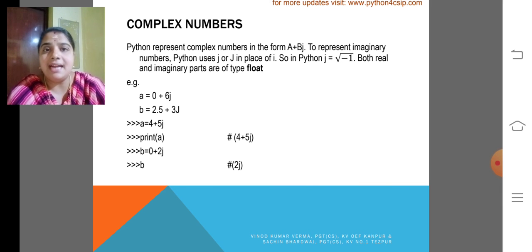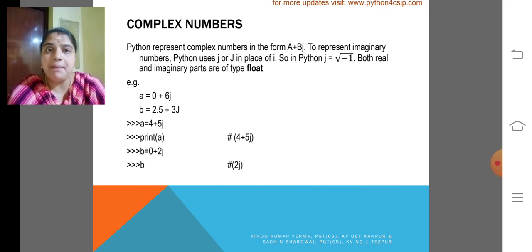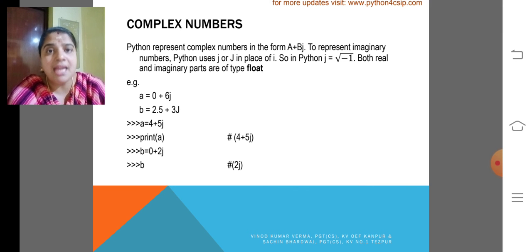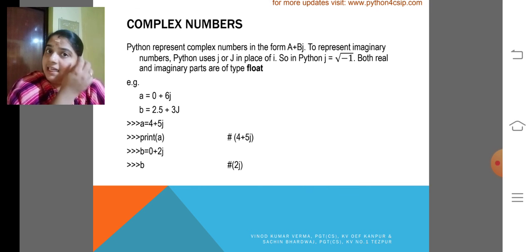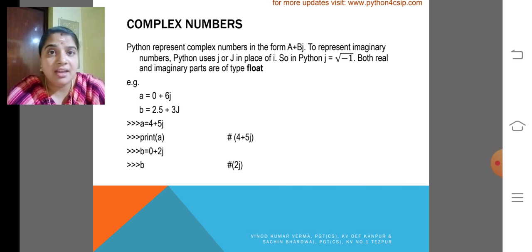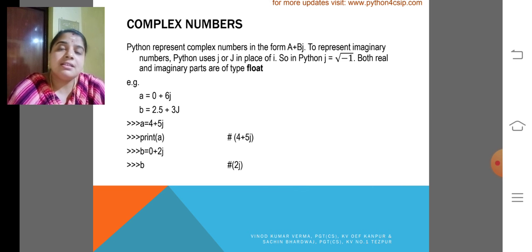That also we had studied earlier, but in the literal form. Here, Python represents complex numbers in the form of A plus BJ or A plus BI. BI is the imaginary part. A is the real part. Python uses J, capital J or small letter J in the place of I.